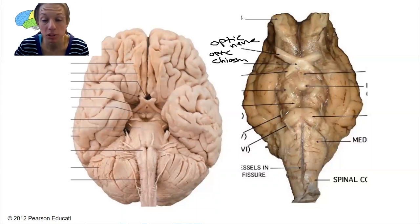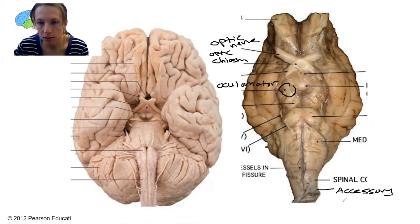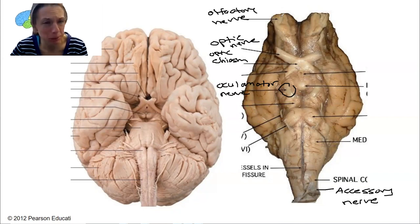Ventral side, we're still doing cranial nerves. This cranial nerve is oculomotor right here. Here we have the accessory nerve. And the last one is olfactory. Maybe not the order you would have done them in, but it doesn't matter.